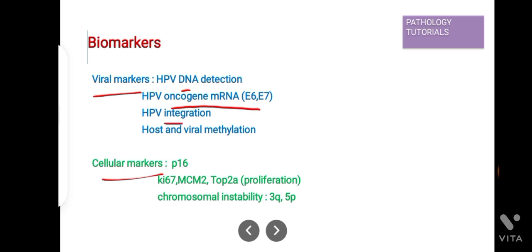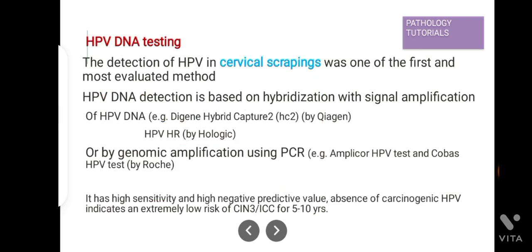Viral markers also include HPV integration and host and viral methylation. Cellular markers include p16, Ki67, MCM2, and TOP2A, which are proliferation markers, and chromosomal instability at 3q and 5q. We will discuss all these biomarkers in the upcoming slides.